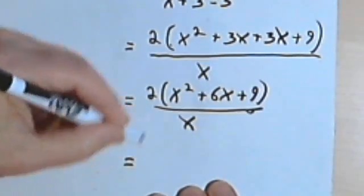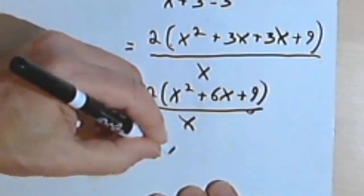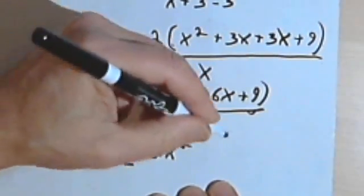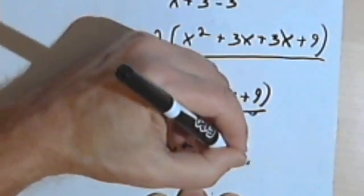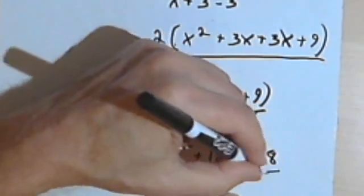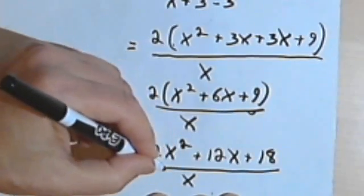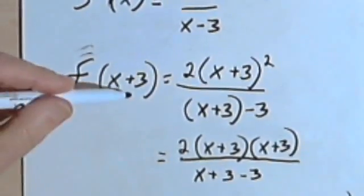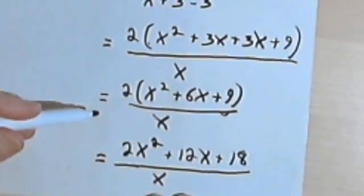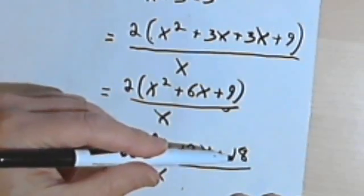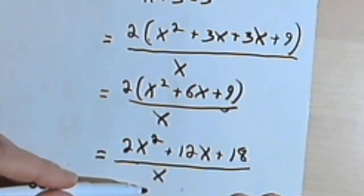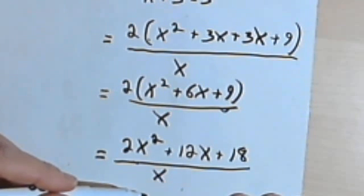So I'm still going to have 2 times x squared plus 6x plus 9 over x. And I'll end up by distributing this 2, so I'll have 2x squared, 2 times 6x is 12x, 2 times 9 is 18, and that's all over x. So f of x plus 3 equals 2x squared plus 12x plus 18 over x.